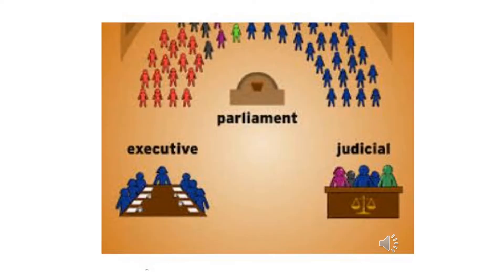Under the parliamentary system, two key branches emerge: the Executive, which implements laws, and the Judicial, which provides justice. The Parliament of India is composed of the President, Lok Sabha and Rajya Sabha. A fixed number of members of Parliament are directly elected by the people.